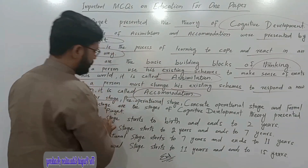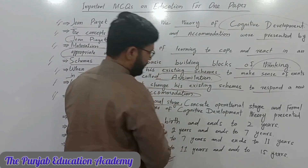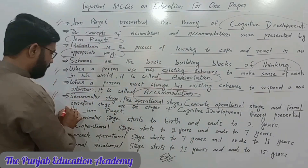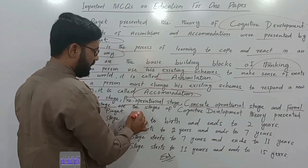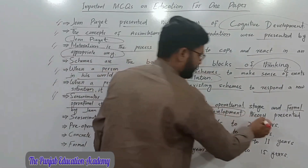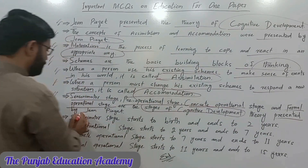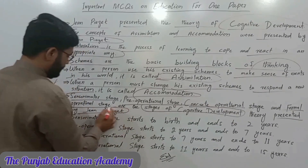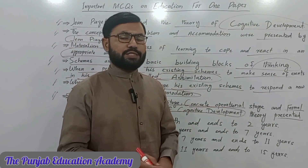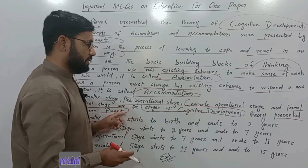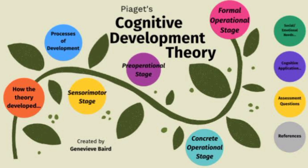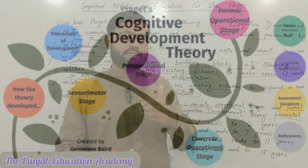Sensory Motor Stage, Pre-Operational Stage, Concrete Operational Stage, and Formal Operational Stage are the four stages of cognitive development theory presented by Jean Piaget.